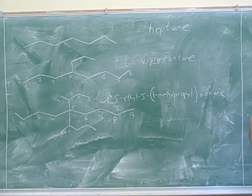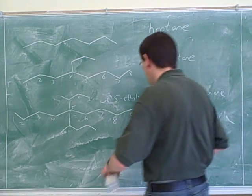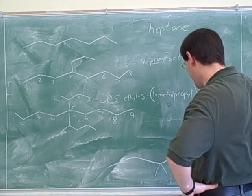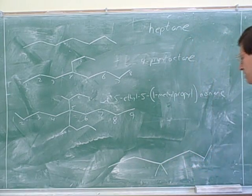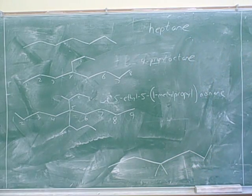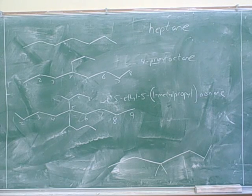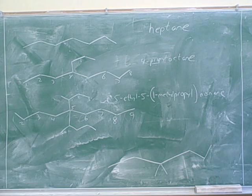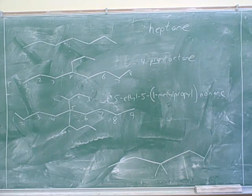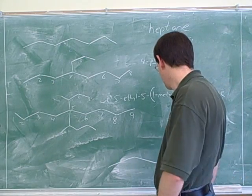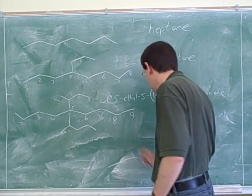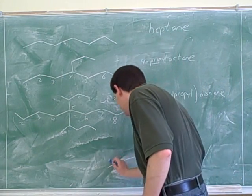You're on the right track, but there are some technicalities we need to fix. Try giving a name to this compound. So it's a hexane, and it has two methyl groups, so it would be 3-dimethylhexane. Close, but not quite — some numbers are missing.